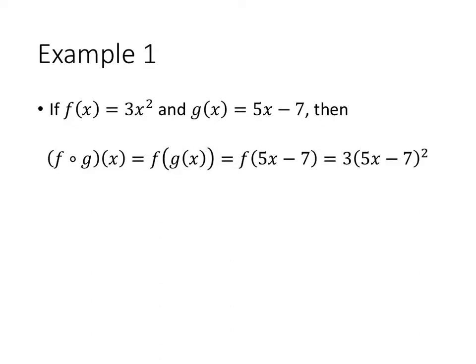Just as an example of what this might look like, if f(x) is 3x² and g(x) is 5x - 7, then f composed with g(x) is what we get when we substitute 5x - 7 in for the x in the f formula. I'll use some color here to help illustrate. So g(x) is again what we sometimes call the inner function, or the inside function.